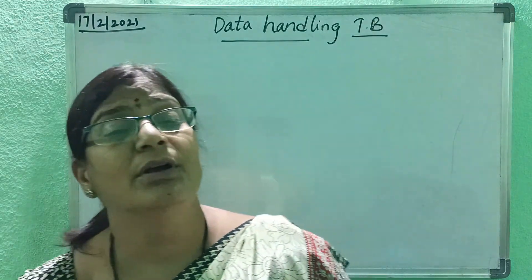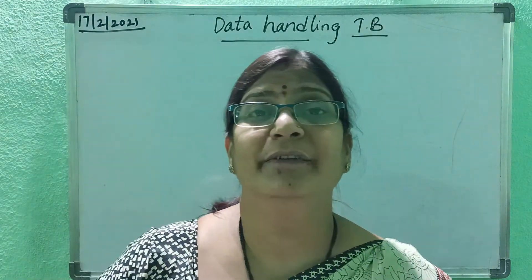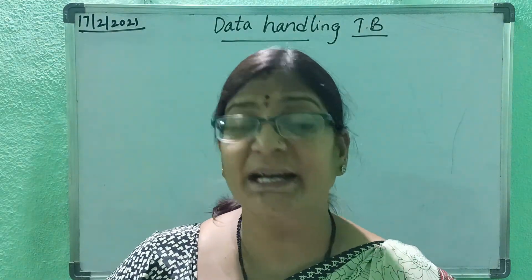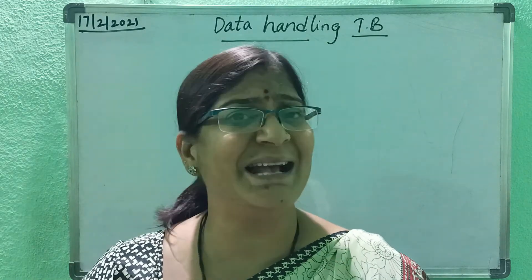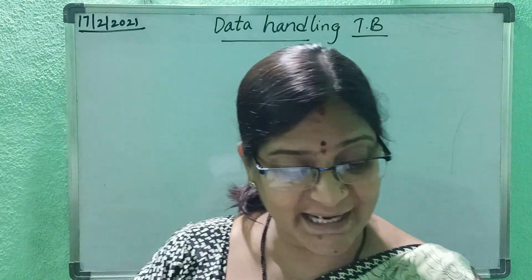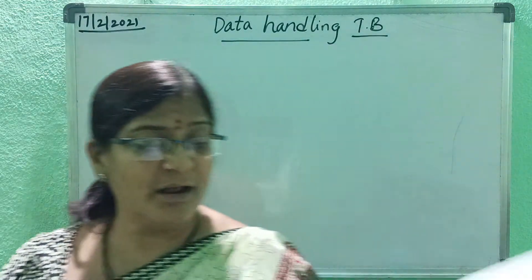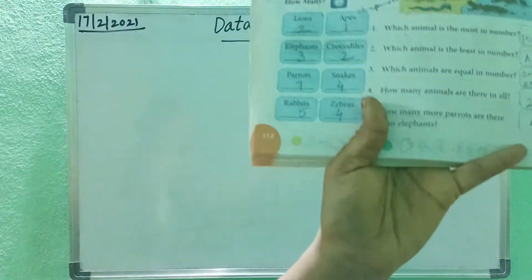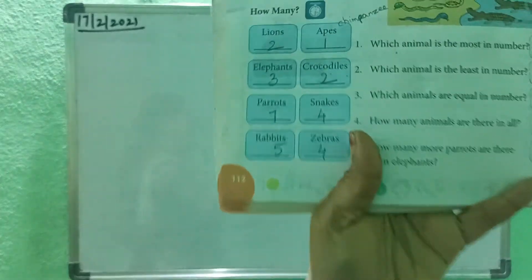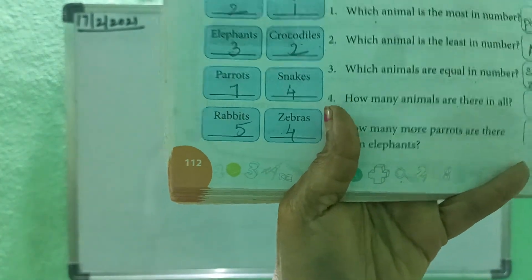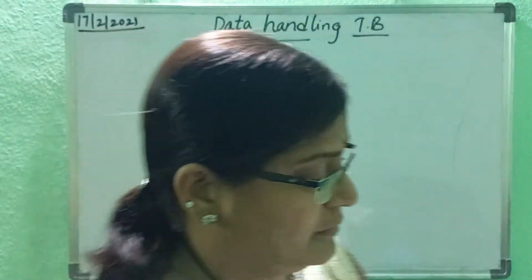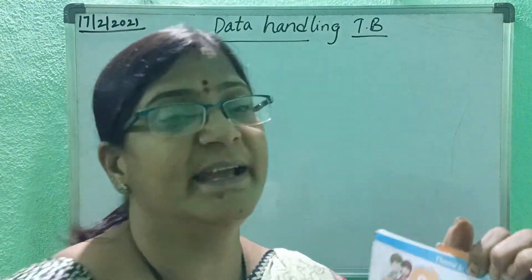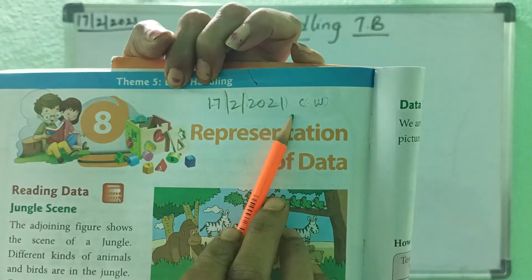Now, we will do one thing — we will work in the textbook, children. So, all of you open your math textbook, page number 112. Now, you write the date here and write class work.